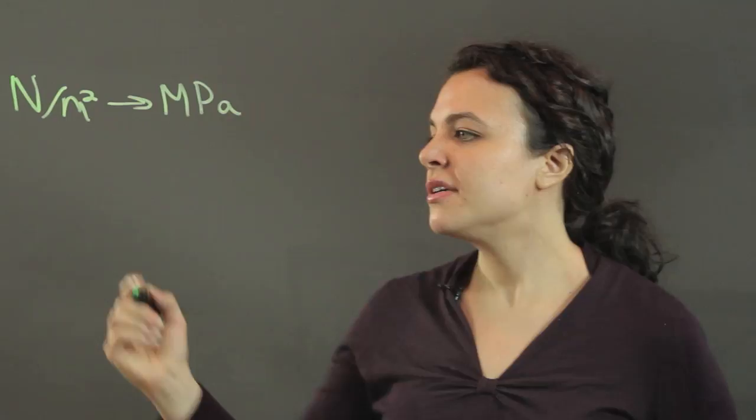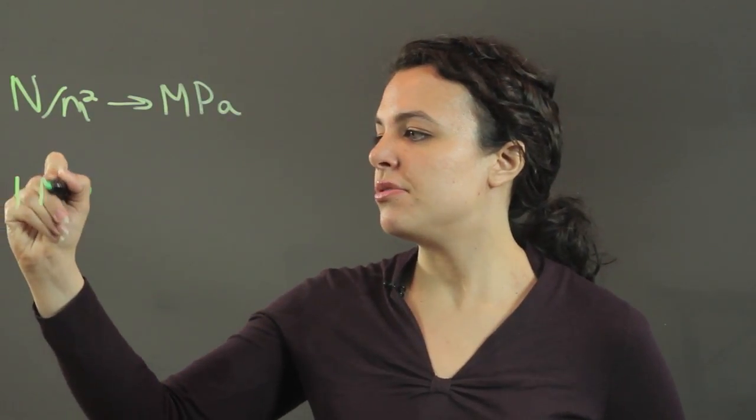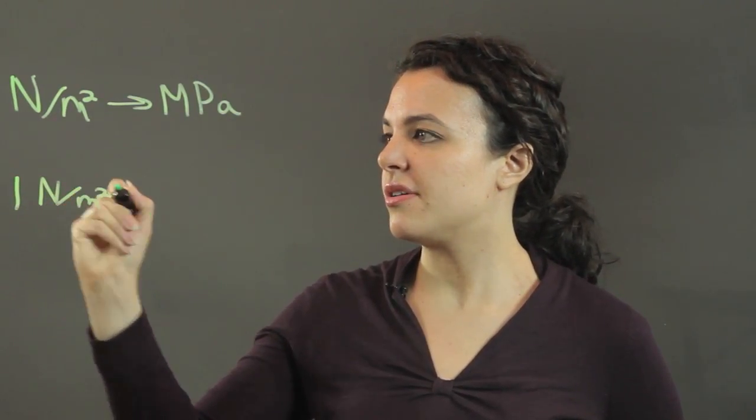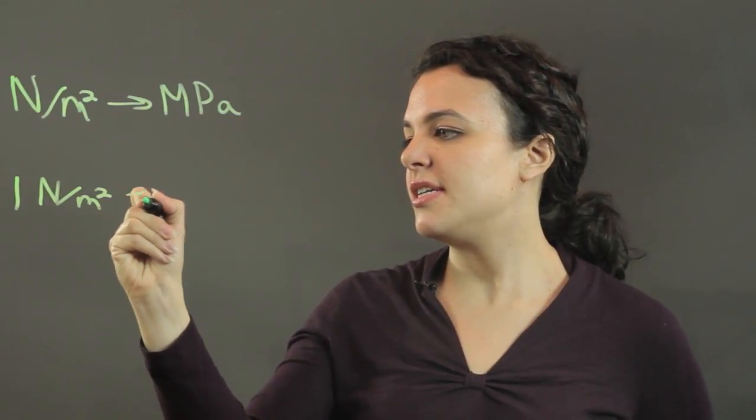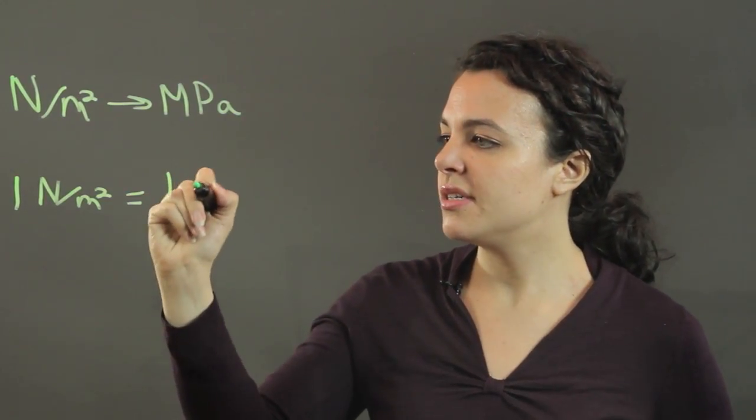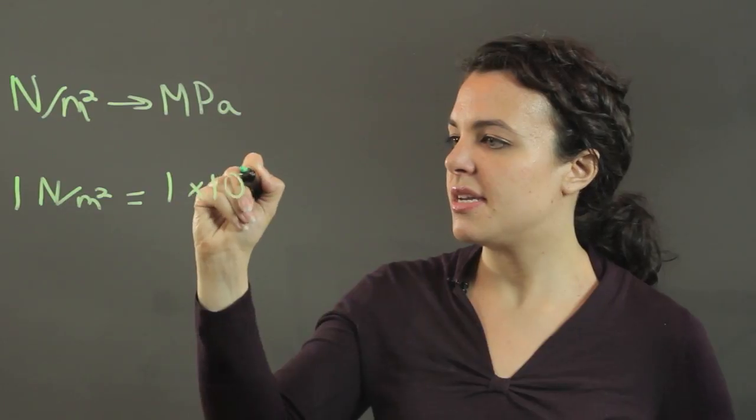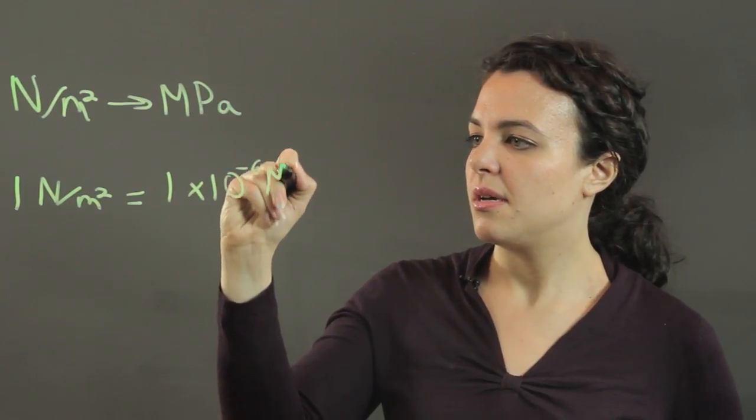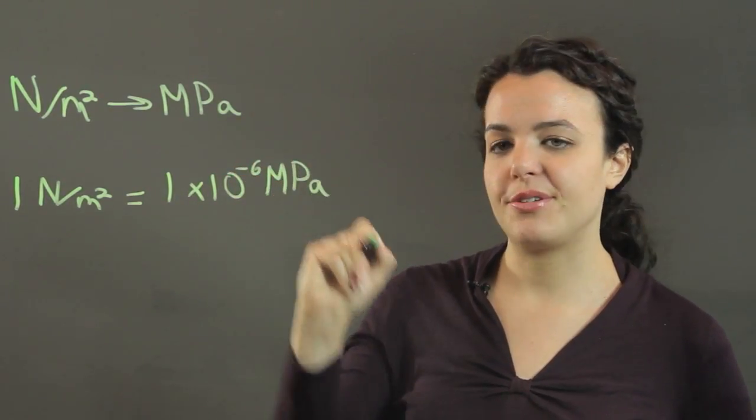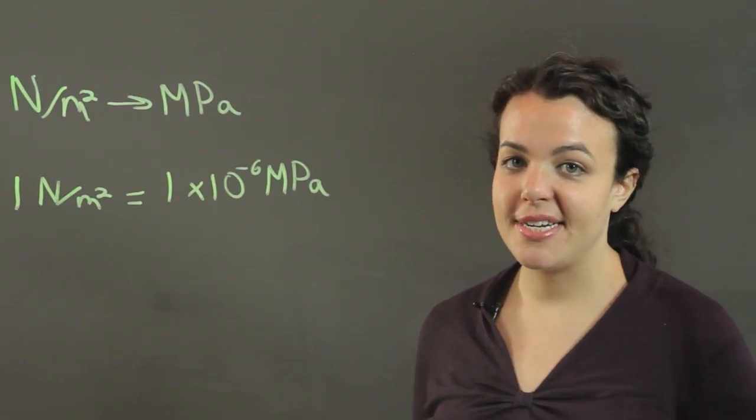One newton per meter squared is equal to one times ten to the negative six megapascals. So this is a pretty easy conversion.